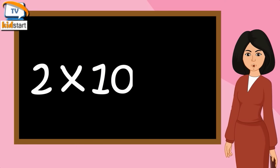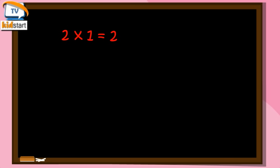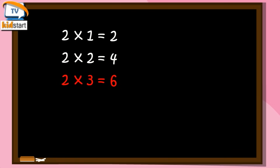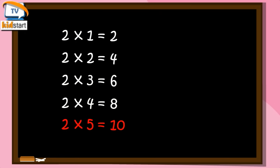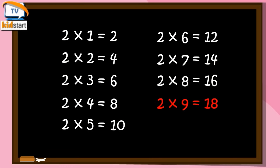Two Tens are Twenty. Two Ones are Two. Two Twos are Four. Two Threes are Six. Two Fours are Eight. Two Fives are Ten. Two Sixes are Twelve. Two Sevens are Fourteen. Two Eights are Sixteen. Two Nines are Eighteen.